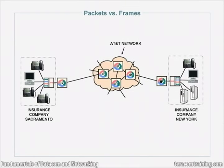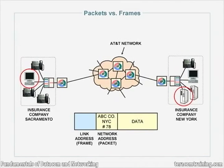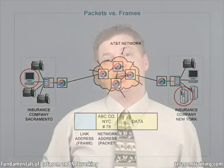Let's say we have an insurance company office in Sacramento and an insurance company office in New York, and we're going to use AT&T's packet network to communicate. The client computer in Sacramento wants to access a database in New York. It takes a piece of its database inquiry message and puts the network address of the server in New York on the front — saying, send this to ABC Insurance Company, computer number 78 in New York City. Then we take that packet and put it in a frame, organizing data on the source computer.